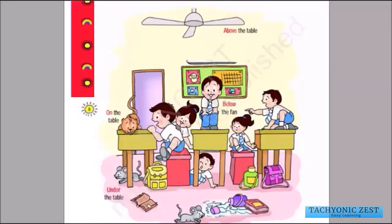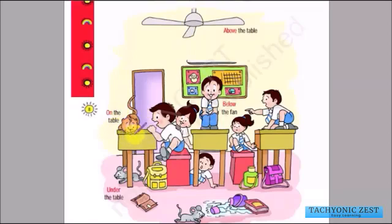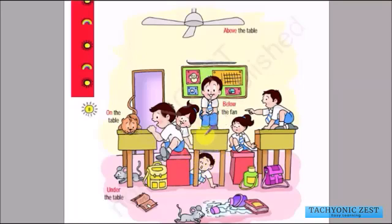In this picture we need to identify the objects which are above, below, on, and under. We can see that this fan is above the table, and the table is below the fan. This cat is on the table, and this rat is under the table. This boy is under the table.